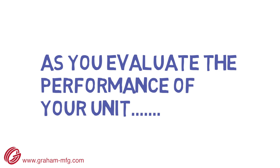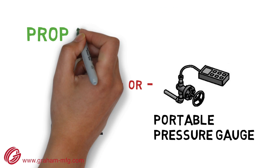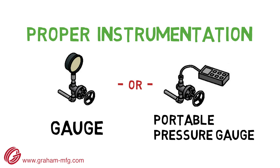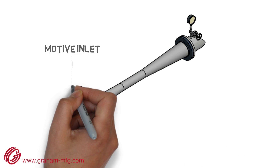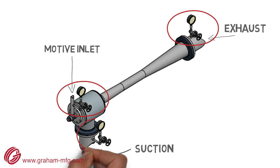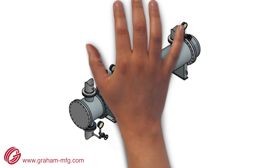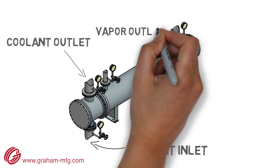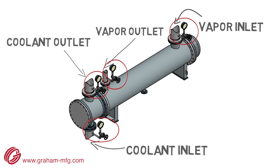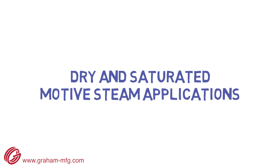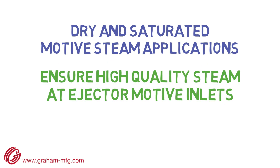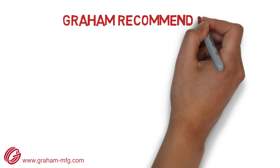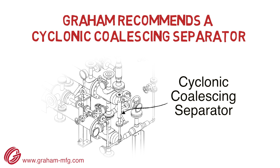As you evaluate the performance of your unit and the variables that can impact performance, the best tool for preventing and diagnosing vacuum system problems is proper instrumentation. Graham suggests pressure and temperature readings at all process and utility connections, as highlighted here. The only exception is that pressure readings are not required at the condensate outlets. For dry and saturated motive steam applications, it is very important to assure very high-quality steam at the ejector motive inlets. To accomplish this, Graham recommends a cyclonic, coalescing separator as close to the ejector as possible.